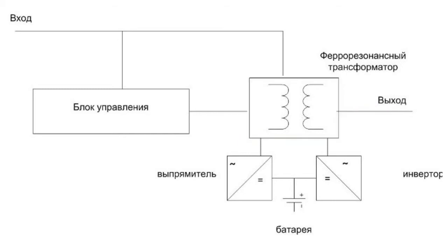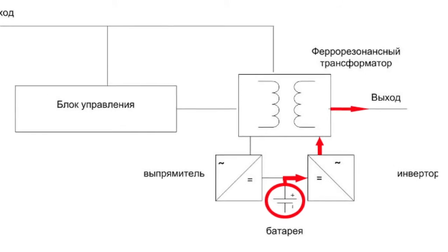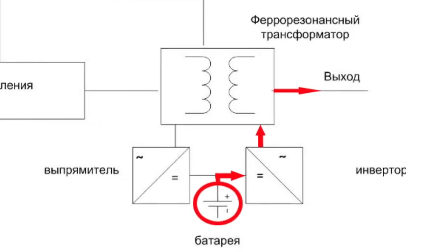This time will quite suffice for the inverting element of the UPS to start supplying load from the storage battery. Thus voltage of a ferroresonant UPS does not have any break when the main voltage disappears.